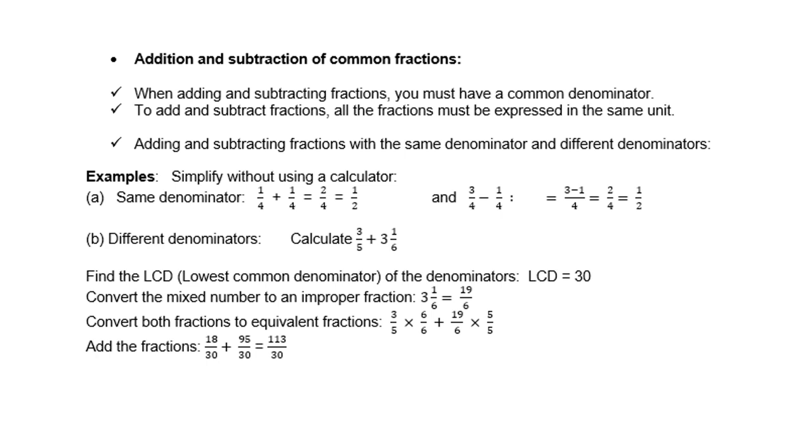Remember, you must multiply three times six and five times six, gives you eighteen over thirty. Nineteen times five and six times five gives you ninety-five over thirty. You must multiply the numerators and the denominators by the same value to maintain equivalency. That's important. Now you just see eighteen plus ninety-five gives you a hundred and thirteen over thirty.